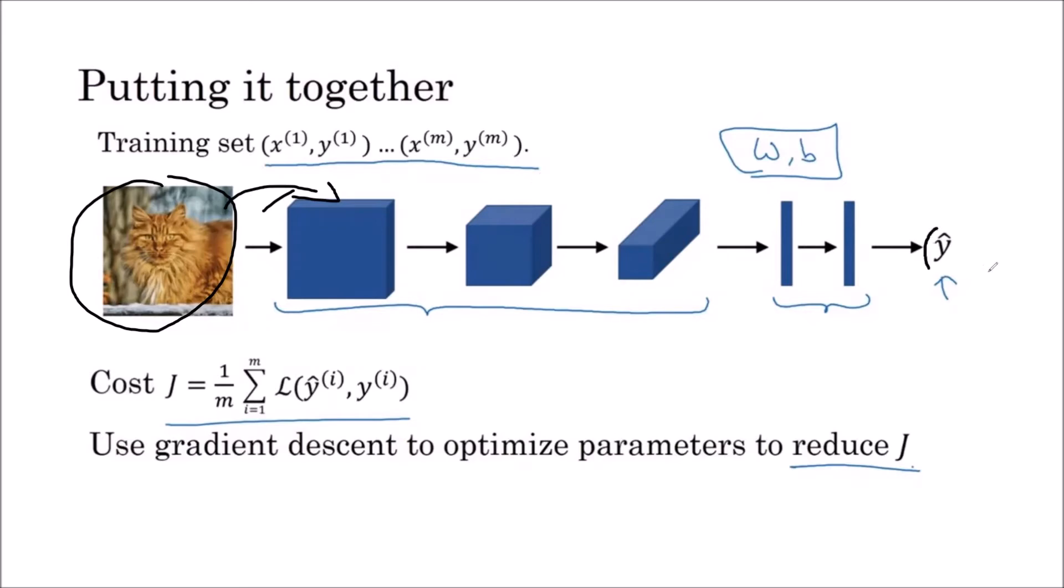Finally we are getting some predicted value y cap. We will use a loss function if it is a classification. We will use different types of loss functions depending on our problem, so depending upon the loss function we are using, we will calculate the loss.